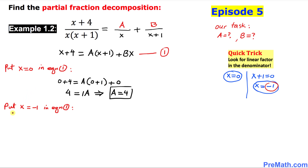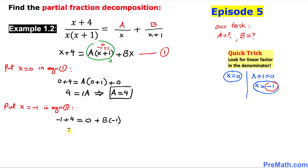Now let's focus on x equal to negative 1. We substitute x equal to negative 1 into Equation 1. The left hand side becomes negative 1 plus 4. On the right hand side, negative 1 plus 1 is zero, so the a term becomes zero. We are left with b times negative 1. Simplifying, 3 equals negative b, so b turns out to be negative 3.